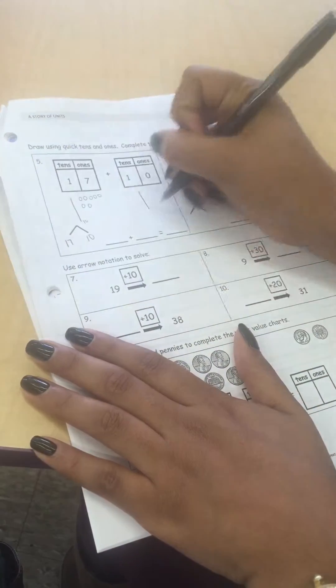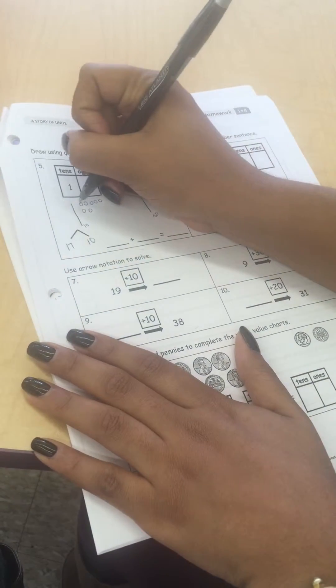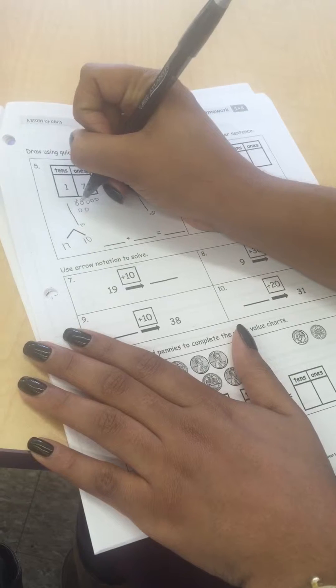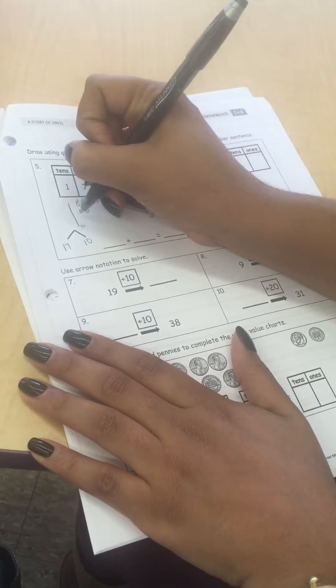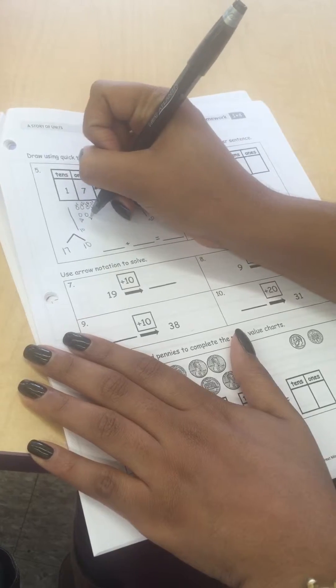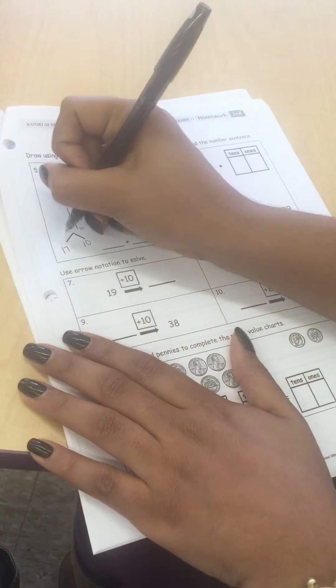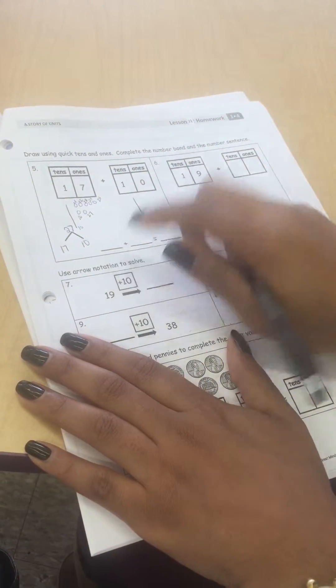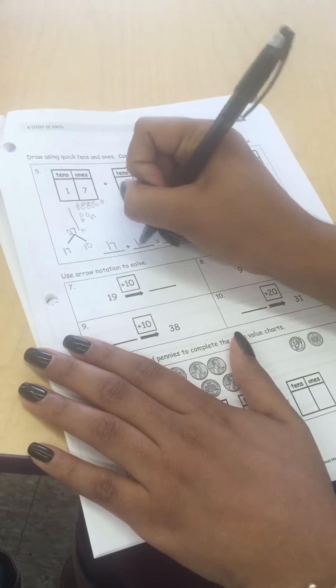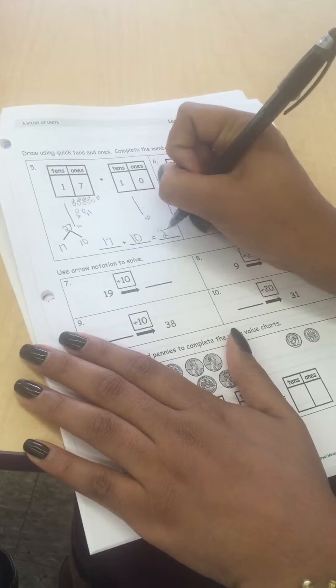So 10, 20, 21, 22, 23, 24, 25, 26, 27. Our total is 27, that goes at the top of our number bond. Then when I write my number sentence, it's 17 plus 10 equals 27.